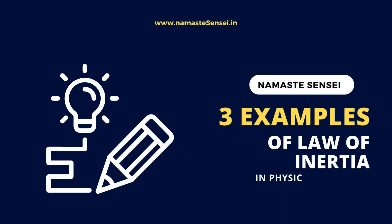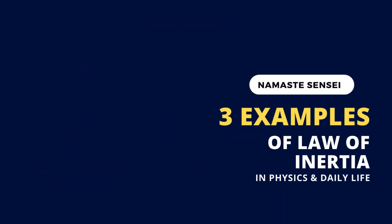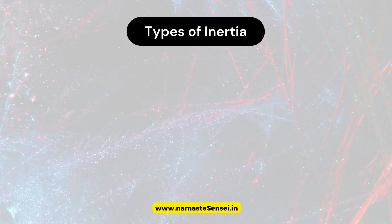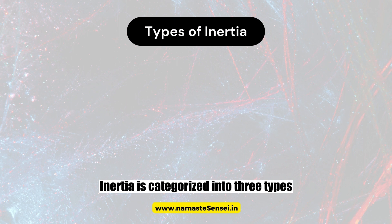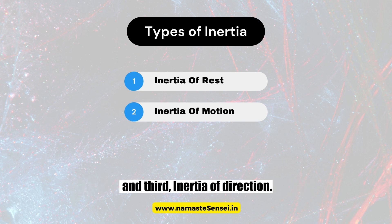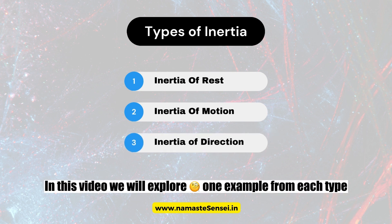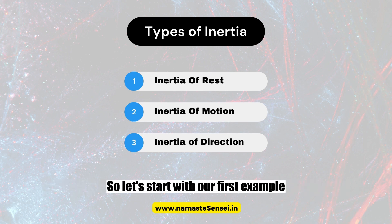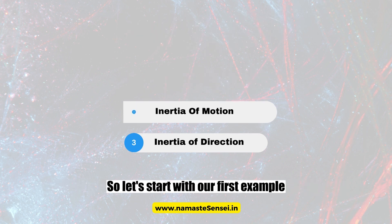Three examples of the law of inertia in physics and daily life. As we know, inertia is categorized into three types: first, inertia of rest; second, inertia of motion; and third, inertia of direction. In this video we will explore one example from each type. So let's start with our first example.